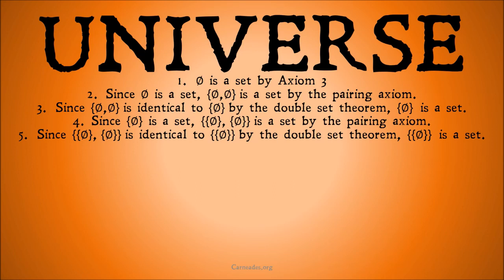You might wonder how we'd prove those sets are distinct, since both the set of the null set and the set of the set of the null set each have one member. We use the theorem proved in the last video: the set of A equals the set of B if and only if A equals B. We drop brackets one at a time — we'd get the question of whether the null set equals the set of the null set, and it doesn't, because one has zero members and one has one member. So this confirms we have a genuinely third distinct set.